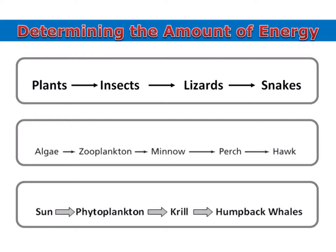They could also give you an amount of energy — a certain number of calories, kilocalories, or joules — and you would be expected to figure out how much of that energy made its way at each trophic level. You do it the same way. Let's say they told us that 10,000 kilocalories were in the plants. The insect population would only get 10% of that, so I just move the decimal over once and 10,000 becomes 1,000 kilocalories in the insects. The lizards only get 10% of that, so move the decimal over again: 100 kilocalories in the lizard population. And the snakes would only get 10.